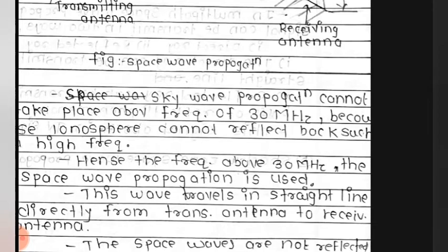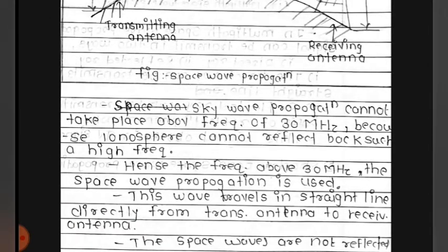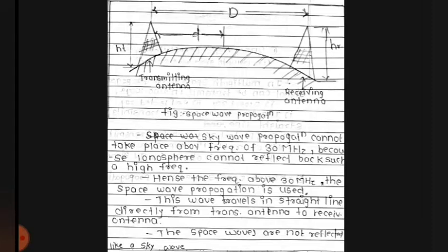30 MHz के ऊपर हम लोग space wave propagation use करते हैं. This wave travels in a straight line directly from the transmitter antenna to the receiver antenna. The space waves are not reflected like sky waves — sky wave में जो waves होती थीं वो reflect होती थीं, लेकिन space wave में नहीं होता है.